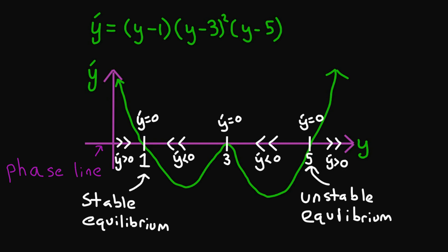The middle equilibrium, y equal to 3, is a little different. If you nudge to the right, you get pushed back to 3. But if you nudge to the left, you keep traveling to the left away from 3. We call this one a semi-stable equilibrium.